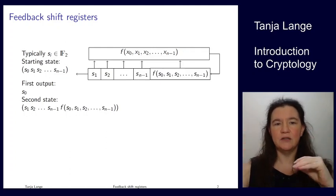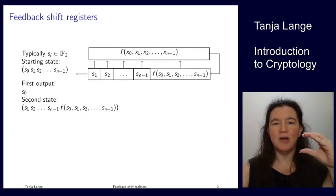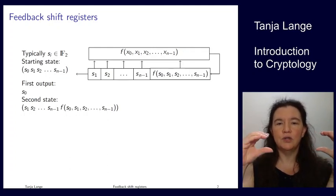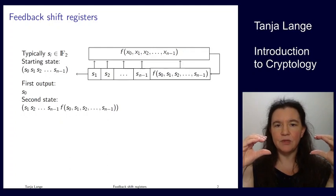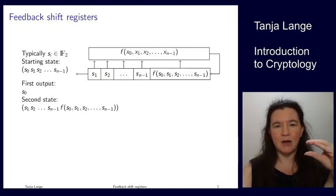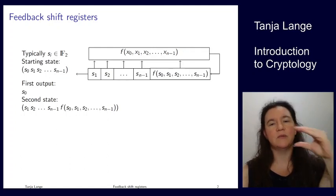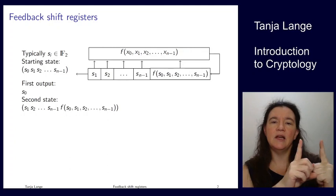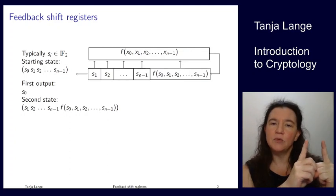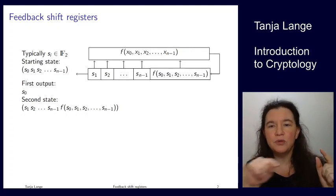The first one, s0, has been output and the state has been updated by shifting over by 1. So s0 is out now and s2 is now in the place of s1, s1 is in the place of s0, sn minus 1 is in the place of sn minus 2, and the last place has been updated with the function of the previous variables.